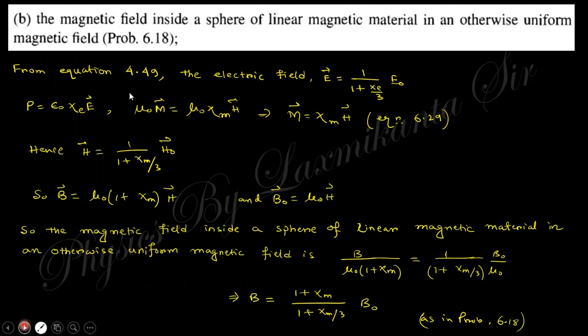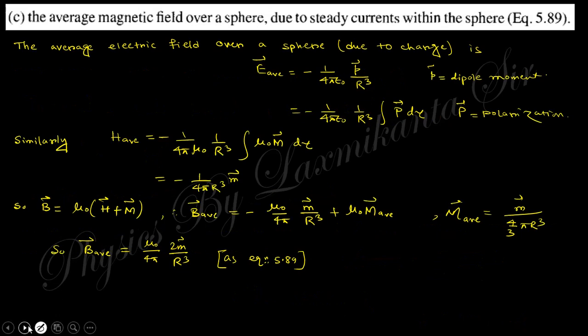Next, find the magnetic field inside a sphere of linear magnetic material in an otherwise uniform magnetic field. From equation 4.1 electrically, we obtain the electric field and polarization P. By comparison, M for the magnetic case will have the same form. Finally, we get B expressed in vector form from comparing the electric and magnetic expressions.